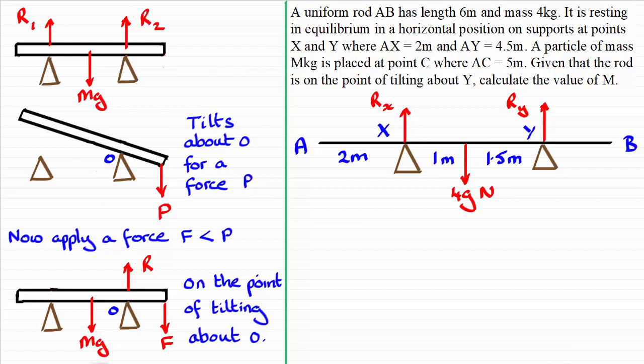So if we put that force in, we've got the force MG, the weight acting at this point C, 0.5 metres away from Y. And we're told that when this mass is placed here, the rod is on the point of tilting about Y.